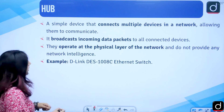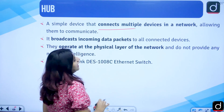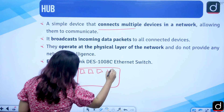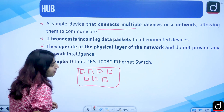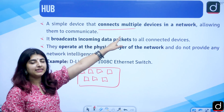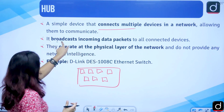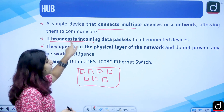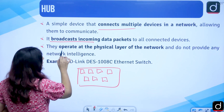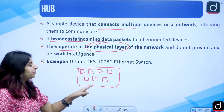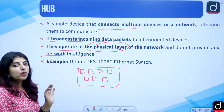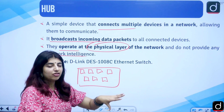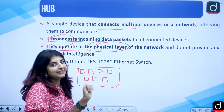Then we have the hub. A hub connects multiple devices in a network allowing them to communicate. It is a multiport device. It broadcasts incoming data packets to all connected devices. A hub operates at the physical layer and does not provide any network intelligence. It is used for network connectivity when sharing information via broadcasting.